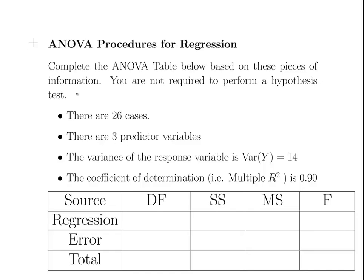First off, we are told there are 26 cases here, so N equals 26. The degrees of freedom for the total would be N minus 1, so N minus 1 is 25.